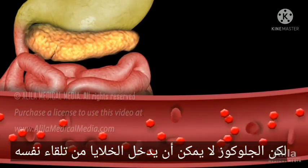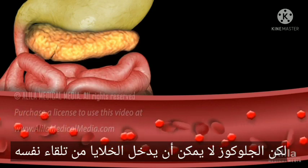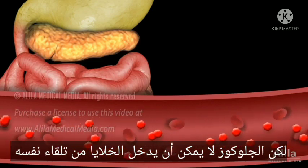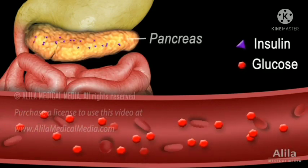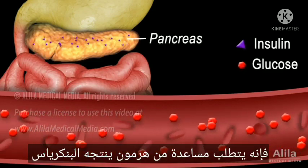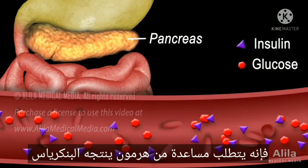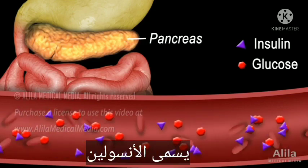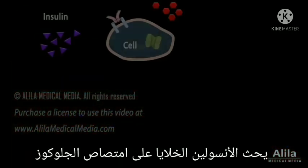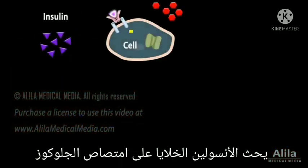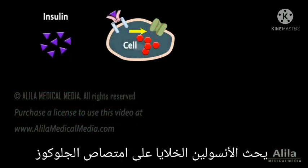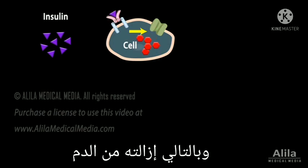But glucose cannot enter the cells on its own. To do so, it requires assistance from a hormone produced by the pancreas called insulin. Insulin induces the cells to take up glucose, thereby removing it from the blood.